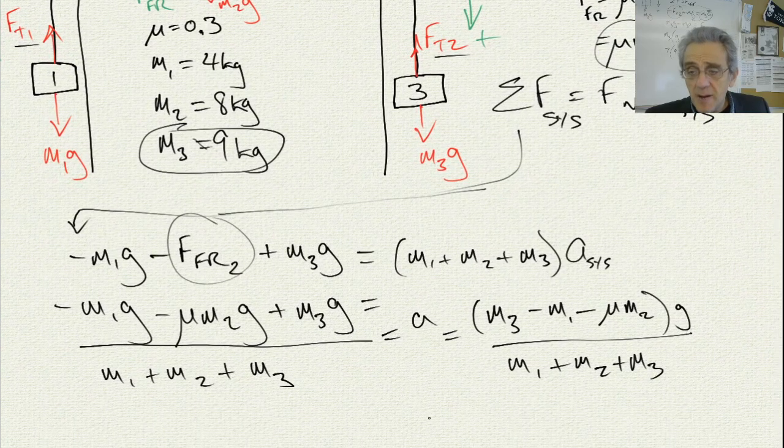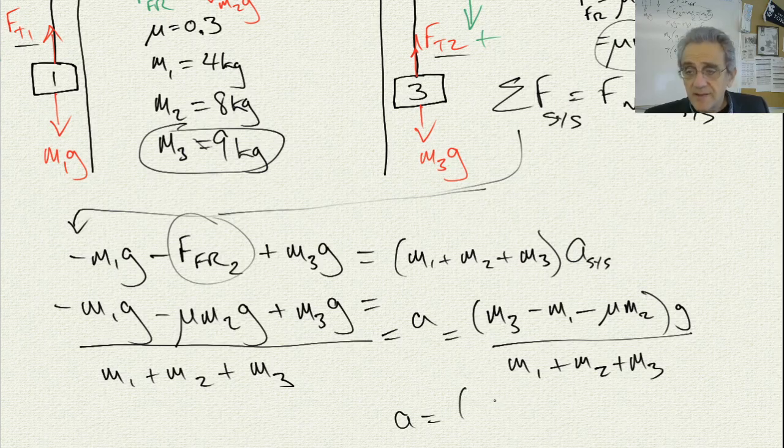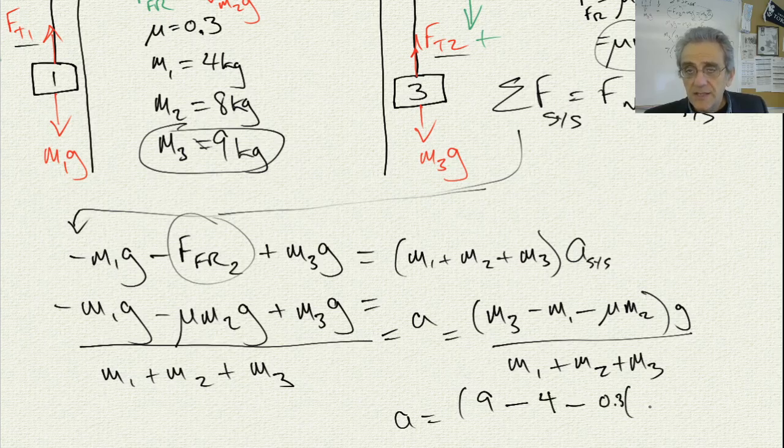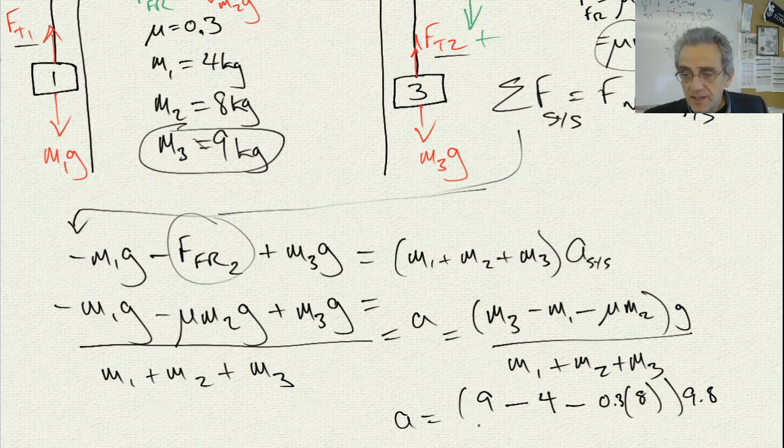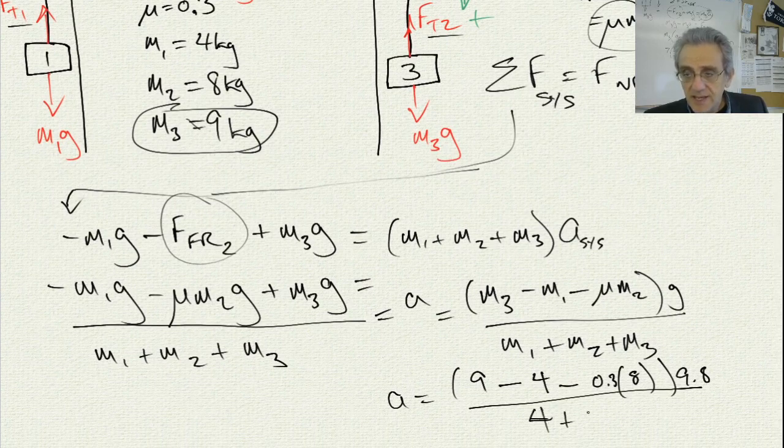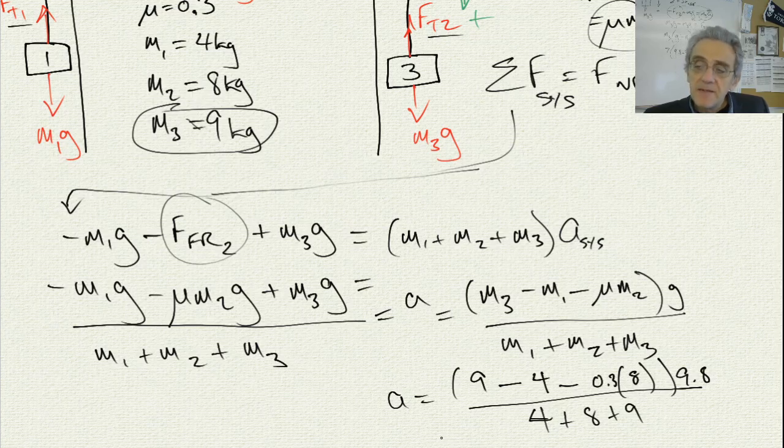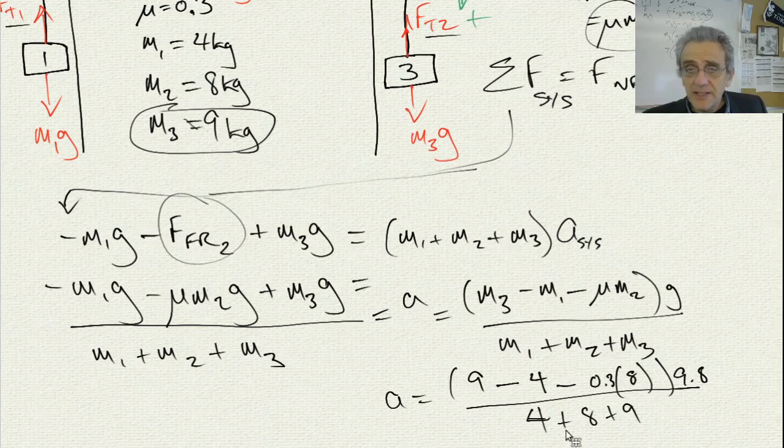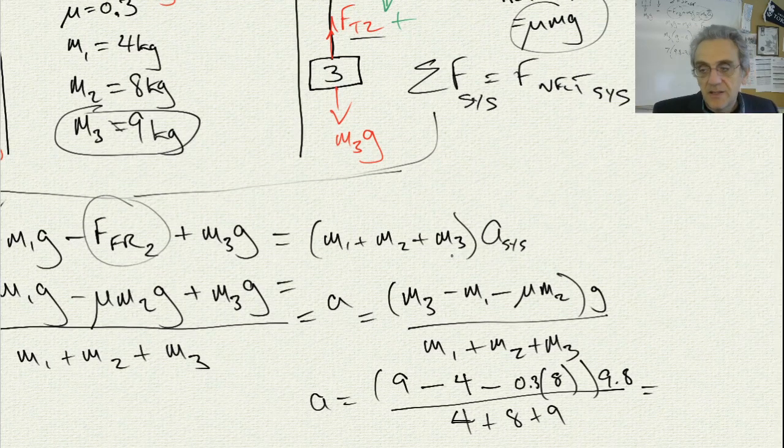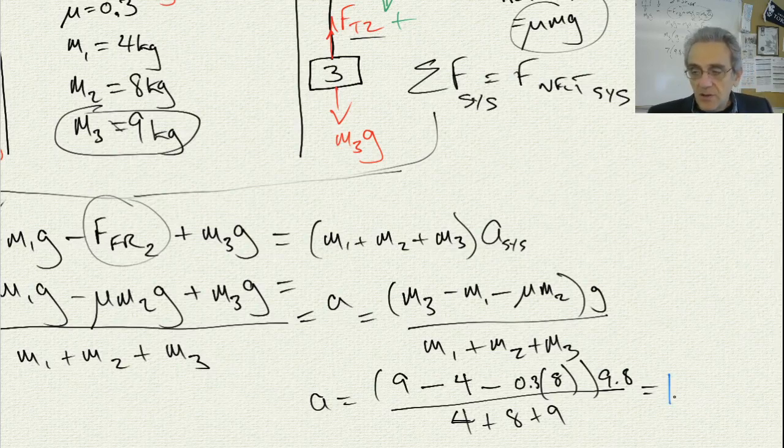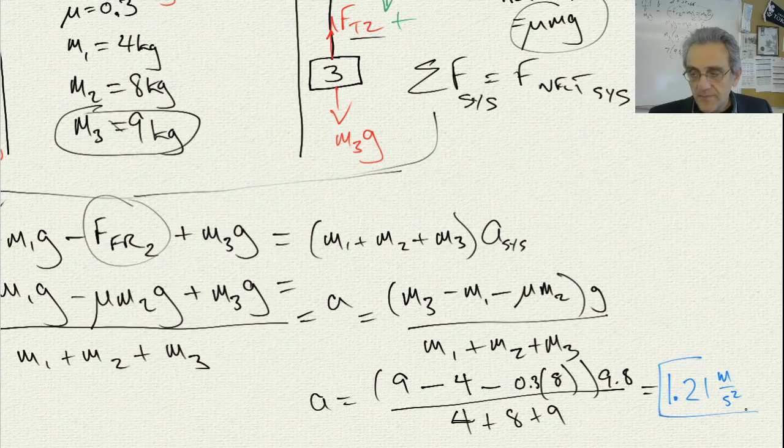And now, I can put in my numbers to calculate A. And I have 9 minus 4 minus 0.3 times M2, which is 8, times 9.8, divided by 4 plus 8 plus 9. Now I can plug this through my calculator, and I will get... So the acceleration ends up being 1.21 meters per second squared.